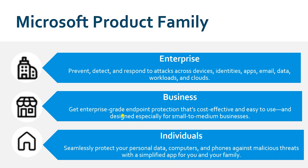Enterprise also covers identities such as Active Directory usernames and passwords, devices, apps, emails, data workloads, and cloud infrastructure — everything comes under Enterprise. If you have a large organization, go for Enterprise. If you have a small infrastructure — below 300 endpoints — you can go for Business. Under Business, endpoint devices won't be supported for more than 300.